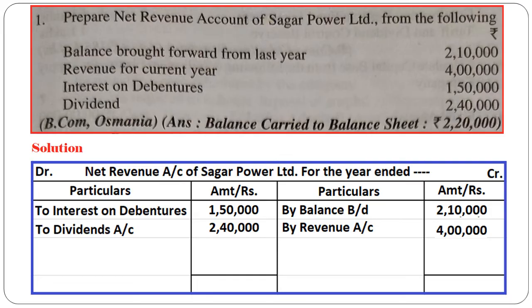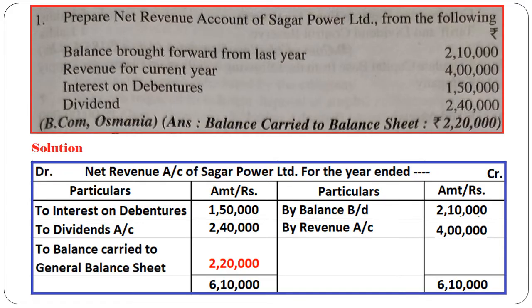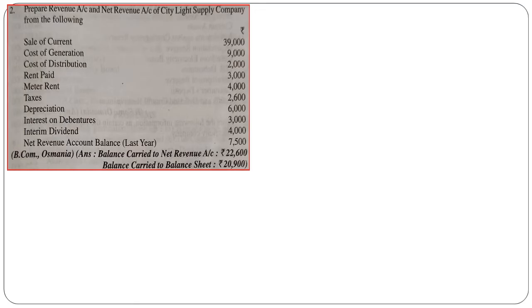Dividend is also debited at Rs. 2,40,000. Once all particulars are filled, we close the account. The credit side totals Rs. 6,10,000, and that figure is written on both sides. The balancing figure is Rs. 2,20,000 on the debit side. This balancing figure is called the balance carried to general balance sheet — meaning this amount will be shown in the general balance sheet as the net revenue account balance.